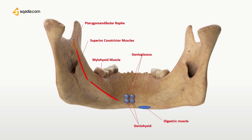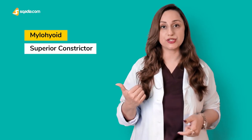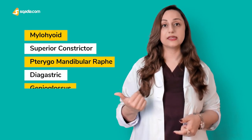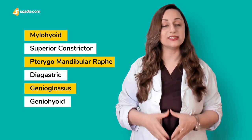Additionally, the investing layer of the deep cervical fascia attaches to the base of the mandible, and the platysma is inserted into the lower border — when you tense your neck muscles, the platysma becomes prominent. To summarize the inner surface attachments: mylohyoid muscle, superior constrictor muscle, pterygomandibular raphe, digastric muscle, genioglossus, and geniohyoid muscle.